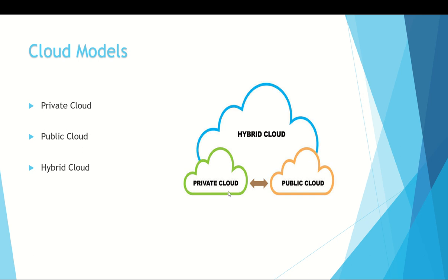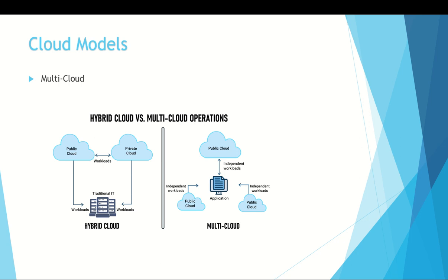A fourth scenario is multi-cloud. In a multi-cloud scenario, you use multiple public cloud providers — perhaps using different features from different providers, or migrating from one provider to another. You deal with two or more public cloud providers and manage resources and security in both environments. For example, you might use Azure, Google Cloud, and Alibaba simultaneously — that is called multi-cloud.